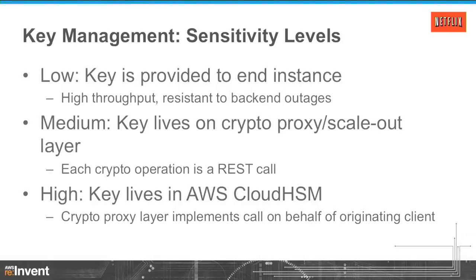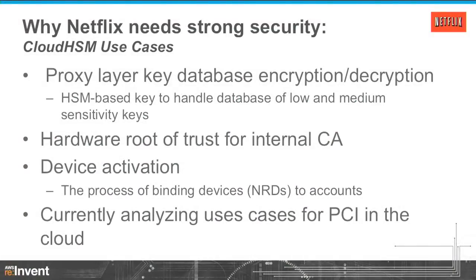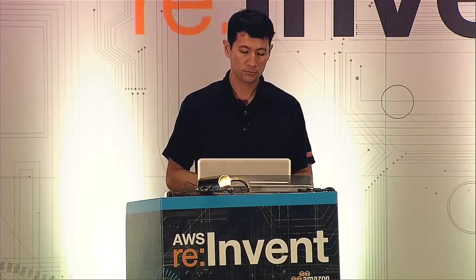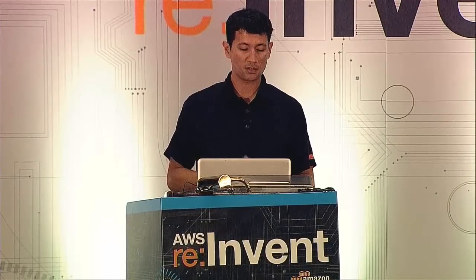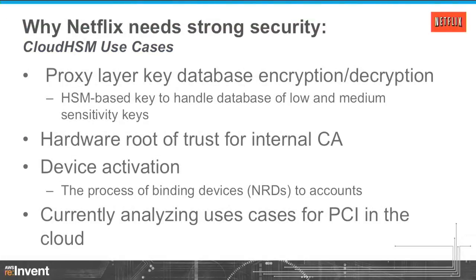What are our specific use cases for Cloud HSM? The first use case: the proxy layer maintains a key database containing those low and medium sensitivity keys. That database itself is encrypted with a high sensitivity key — that notion of envelope encryption or key encrypting keys. When the proxy layer comes up, it grabs that database, the Cloud HSM decrypts the database, and now it's ready to run. Another use case is pretty straightforward: a hardware root of trust for internal CAs. We manage a number of internal certificate authorities for different PKI use cases, and we store the private root key for those CAs on Cloud HSM, which performs the certificate signing for us.